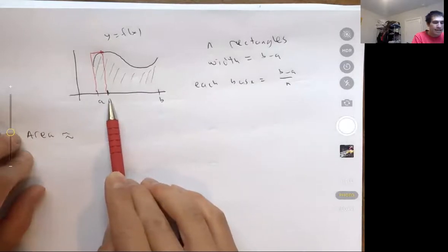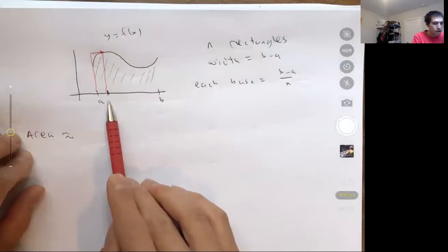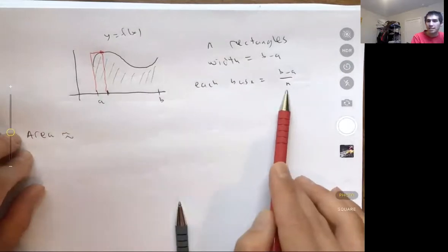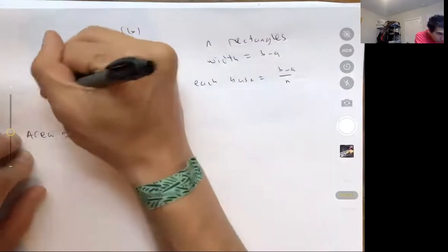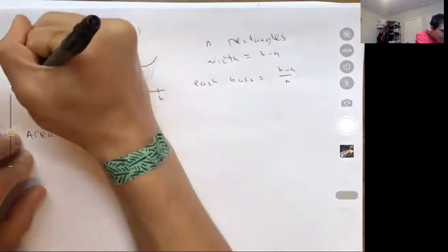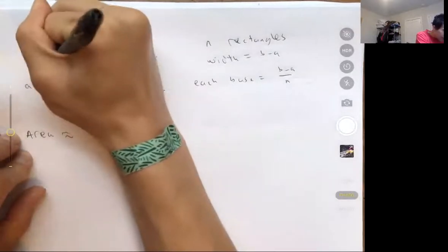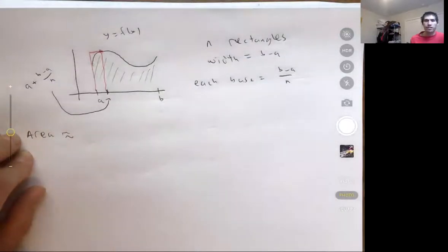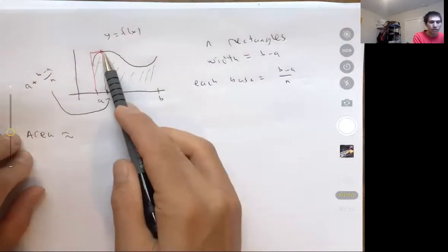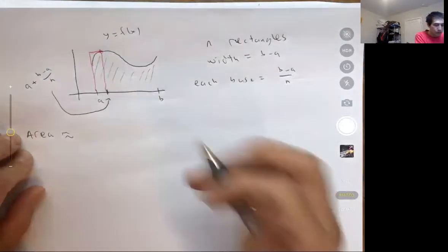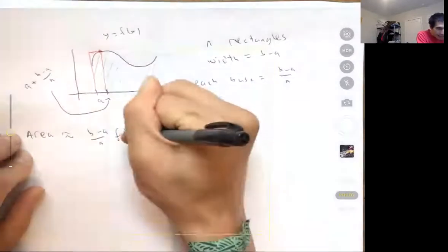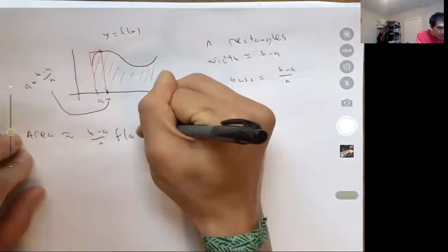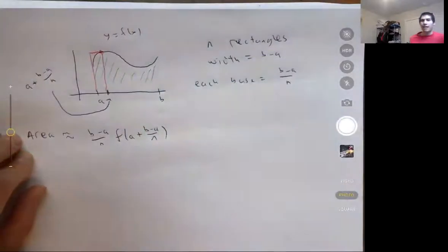I need to figure out what this x value is. I'm starting at a and moving over by one base width, so the x value here is a plus b minus a over n. The height of this rectangle is f evaluated at that point. So the area of the first rectangle is base times height: (b minus a over n) times f of (a plus b minus a over n).